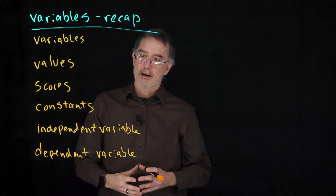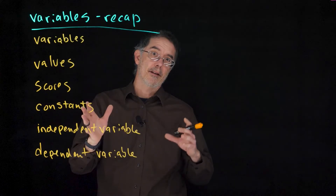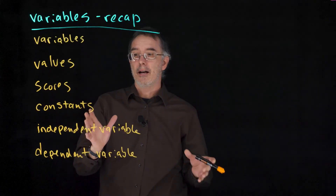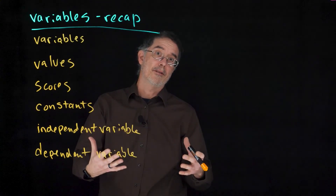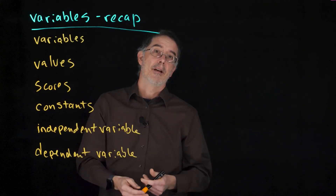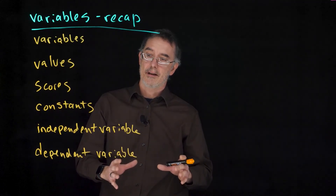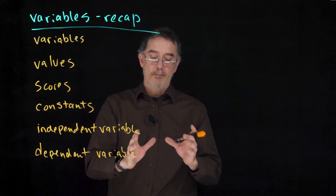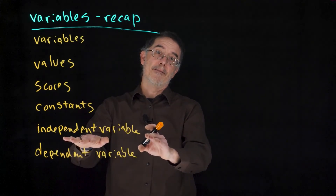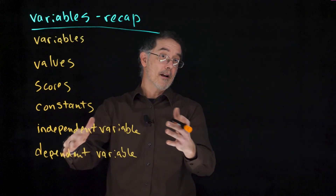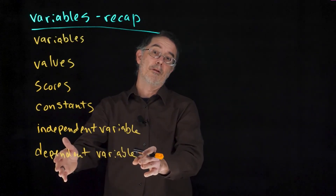Then I talked about how there are experiments and correlational studies, and how experiments are a really good kind of research for making causal inferences. In that kind of research design, the manipulated variable — where people are assigned different experiences — is called the independent variable. That is the causal variable; it is going to be what is causing an effect in the dependent variable, or the outcome variable.